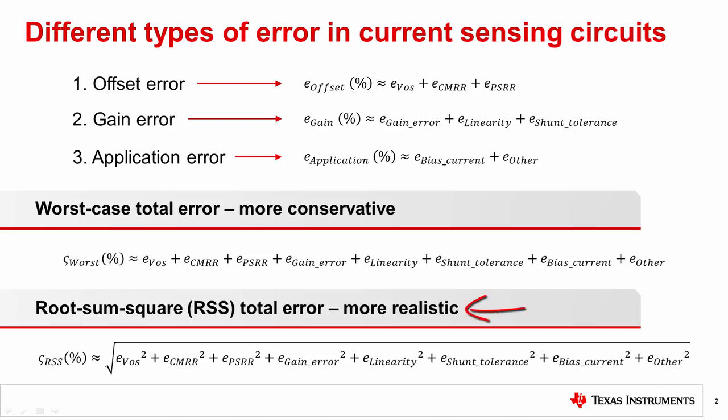A more realistic approximation of total error can be determined by using the root sum of the squares RSS method to combine the error types. To use this method, take the square of the maximum value for each error source, add them together, then take the square root of the result.